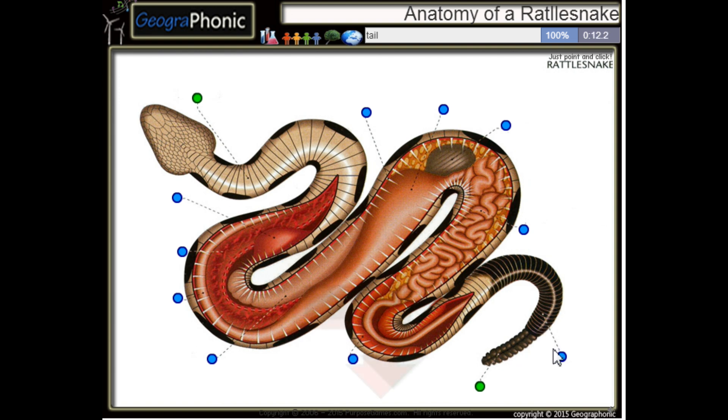This is of course its tail. This is a rib, a single rib. This is the stomach of the rattlesnake.